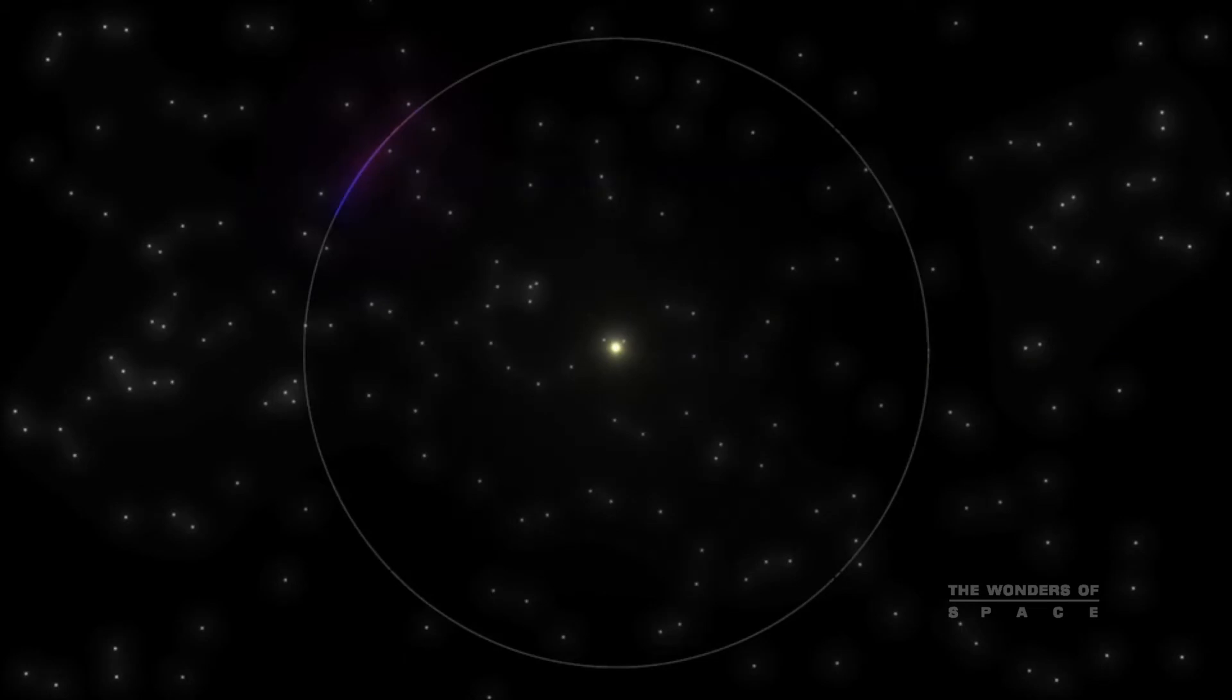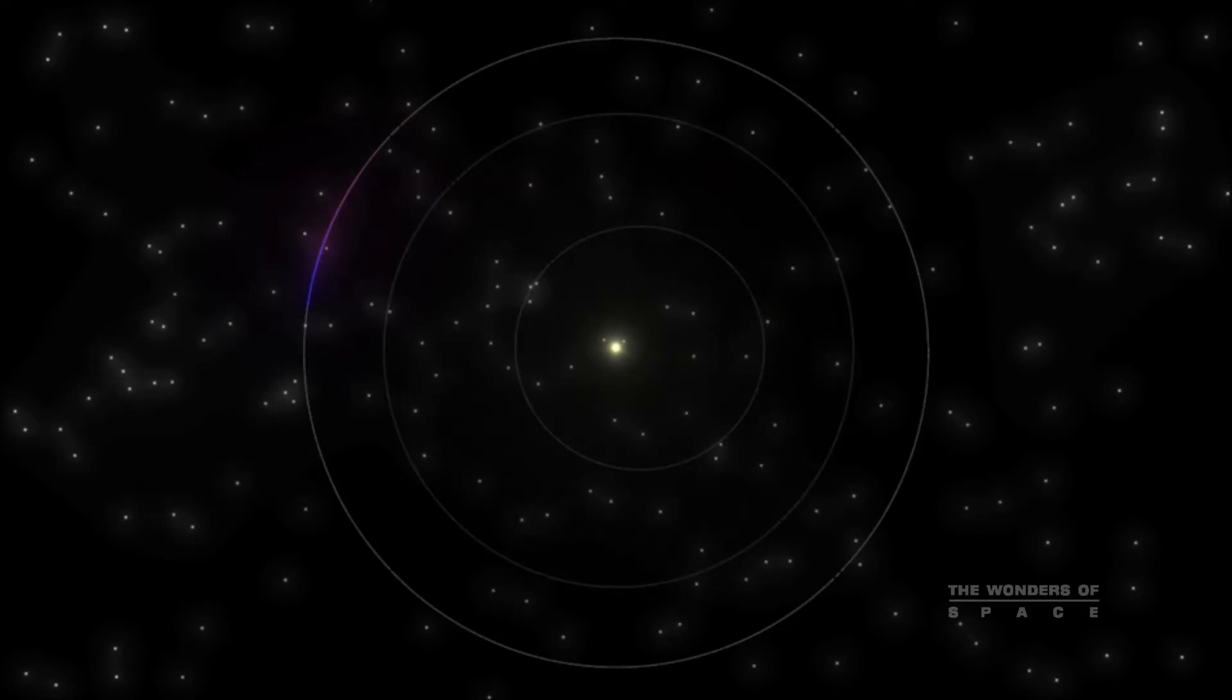At 93 million miles from the Sun, the Earth is the third innermost planet, and is the only place in the Solar System that we know of that has liquid water.